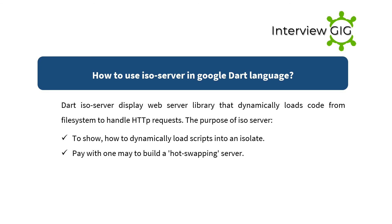How to use the ISO server in Google Dart? The Dart ISO server is a web server library that dynamically loads code from the file system to handle HTTP requests. The purpose of the ISO server is to show how to dynamically load scripts into an isolate.